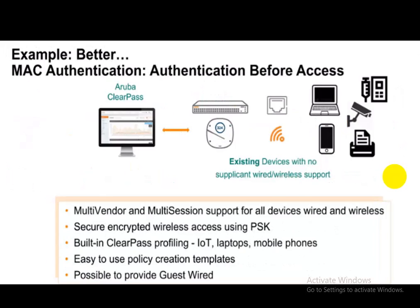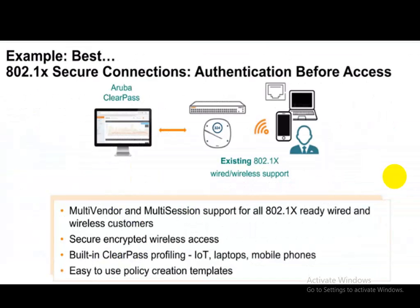There are three types of authentication methods in ClearPass. The first is web authentication, used with the OnGuard agent. The second is MAC authentication, which uses RADIUS to authenticate the device — the username and password is essentially the MAC address of the system. The third is 802.1X, which requires Active Directory credentials. With 802.1X, only AD credentials are allowed on the network, making it more secure than MAC authentication.